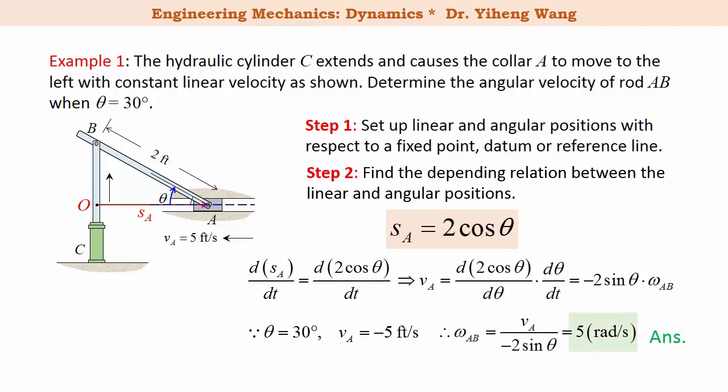Please pay attention to how the angular velocity of rod AB is solved from the linear velocity of point A, because point A's absolute linear position is related to the angular position of the rod.